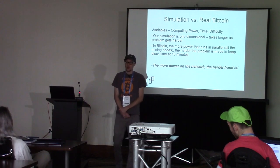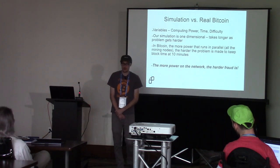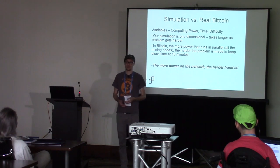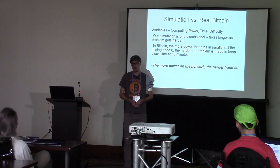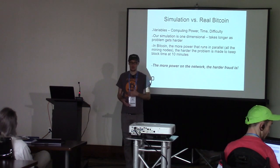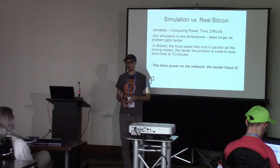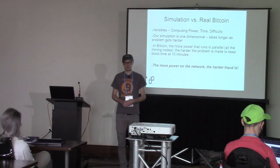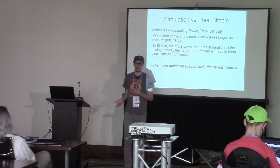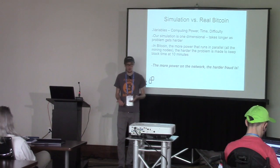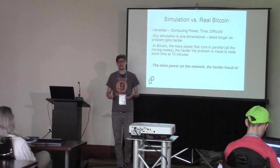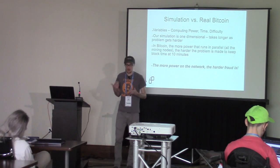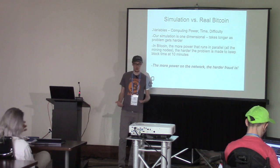Was Bitcoin always that secure even in the beginning? Cryptographically speaking, the algorithms have been the same since the beginning — it uses SHA-256. What has made it more secure over time is the network effect of more miners coming online. As more computing power joins the network, the Bitcoin software adjusts the difficulty and makes it harder to find proof of work. In the early days, running on desktop PCs, a chain reorganization was more feasible, but it became economically unviable very quickly as the network scaled.